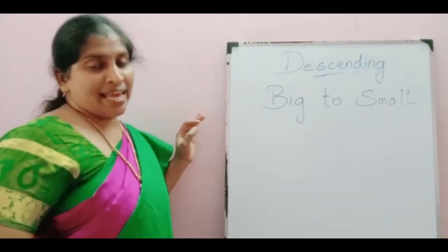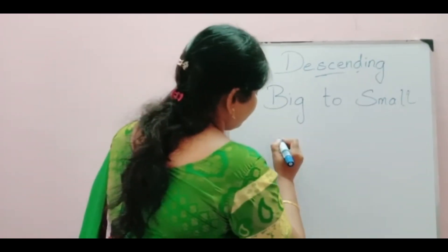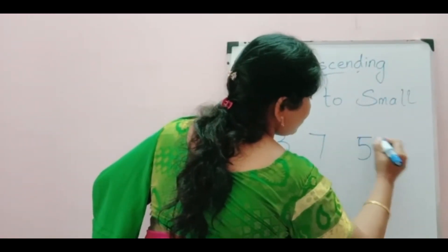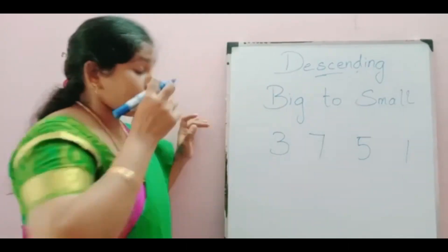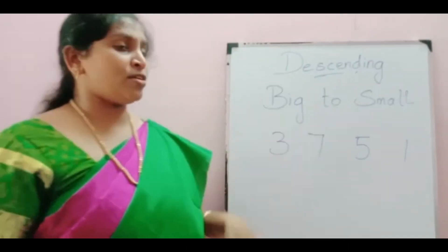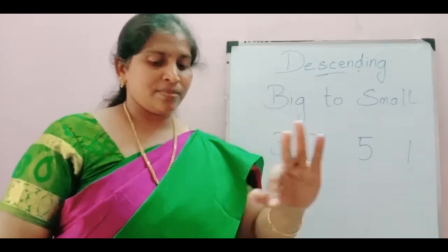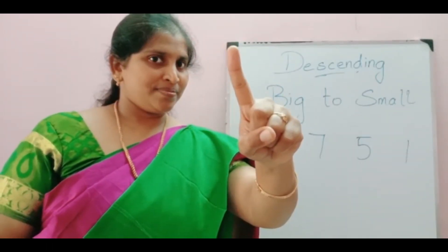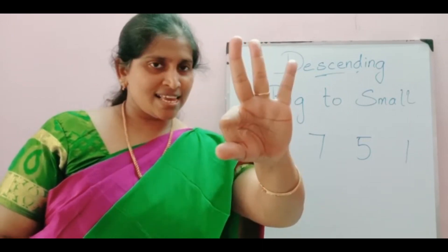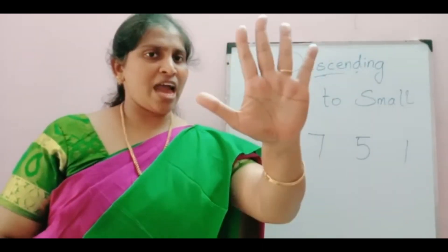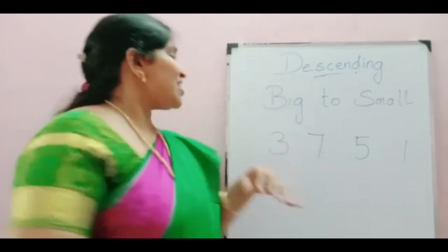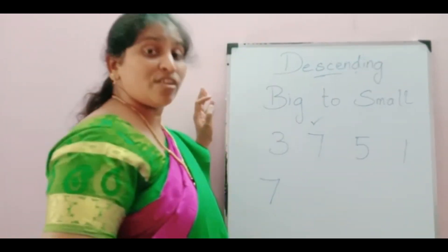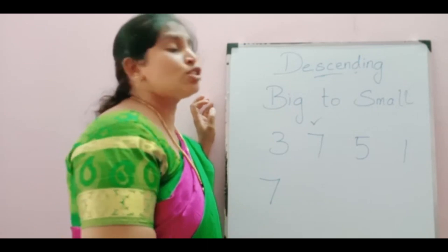We will do an example. The numbers are 3, 7, 5, and 1. Tell me which is the biggest number: 3, 7, 5, 1? Good — 7. So write 7 first. Descending means big to small.